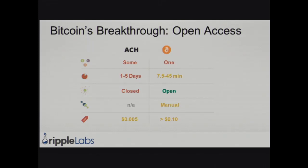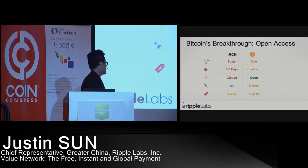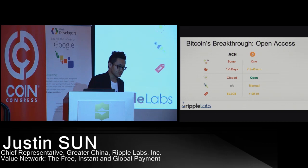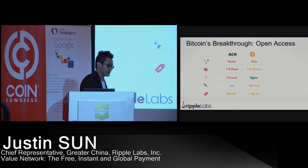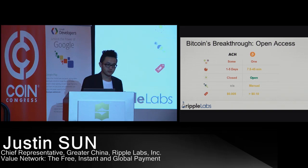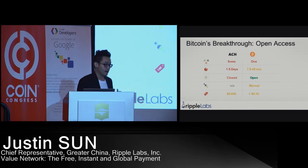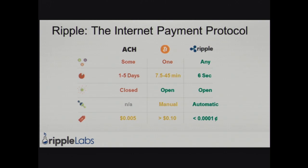Bitcoin is the first step — it has a very good breakthrough. It takes about two minutes to get one confirmation and six confirmations to confirm a transaction. It is open source, decentralized, and has very low fees. However, there are two problems with Bitcoin. One is that Bitcoin is more like a currency than a protocol. Also, the six-confirmation transaction time, while good, is still slower compared to Ripple, which I will introduce next.